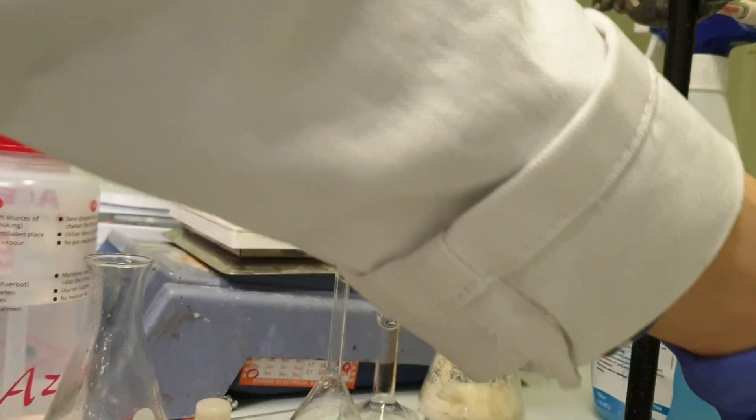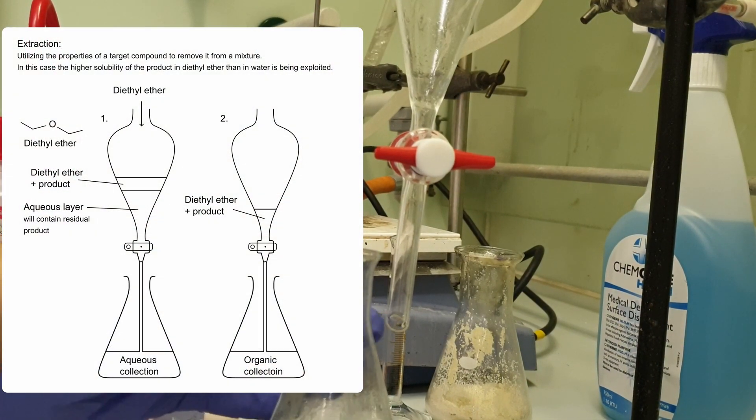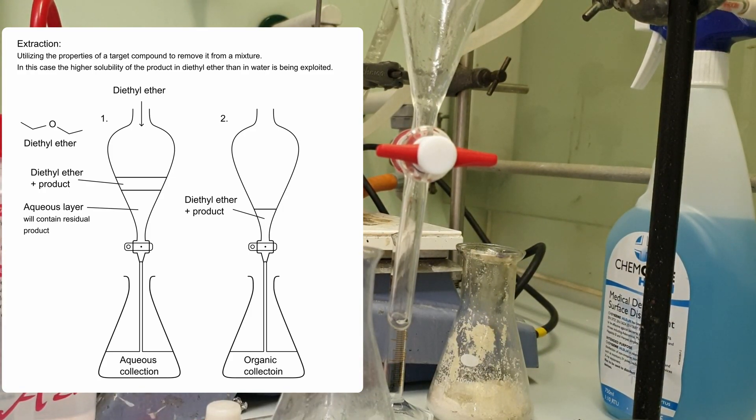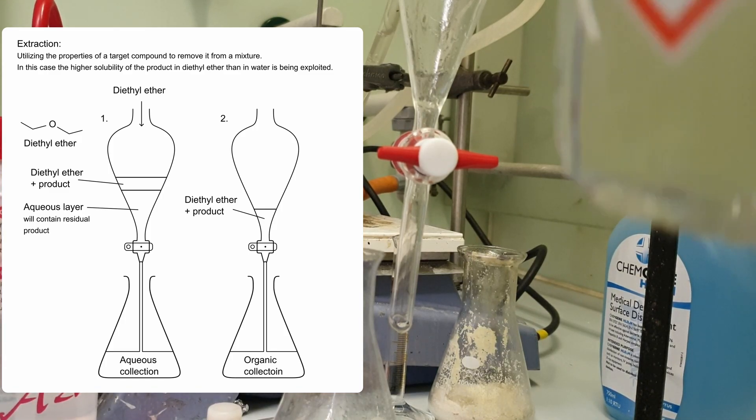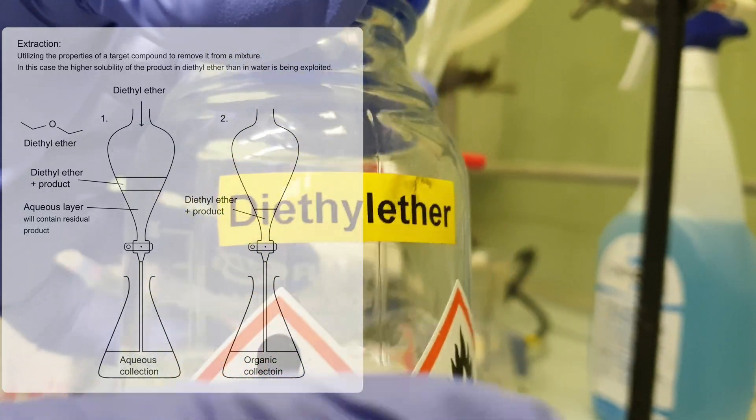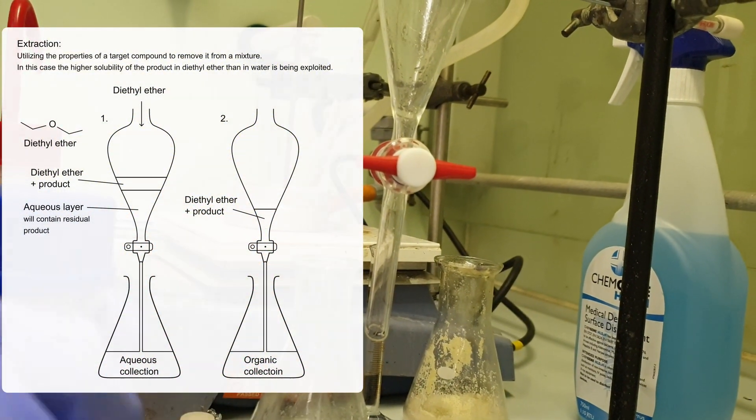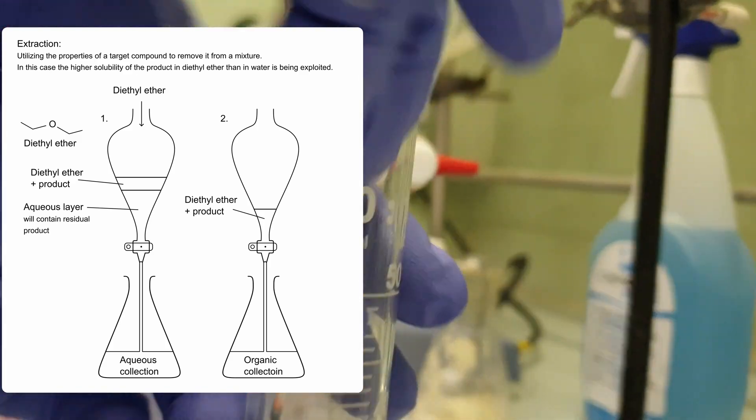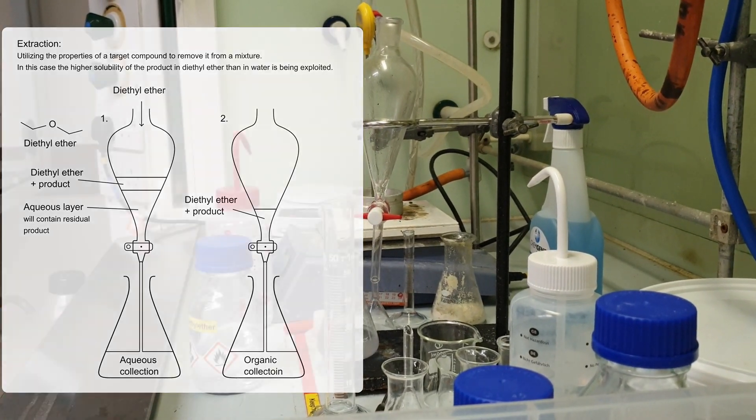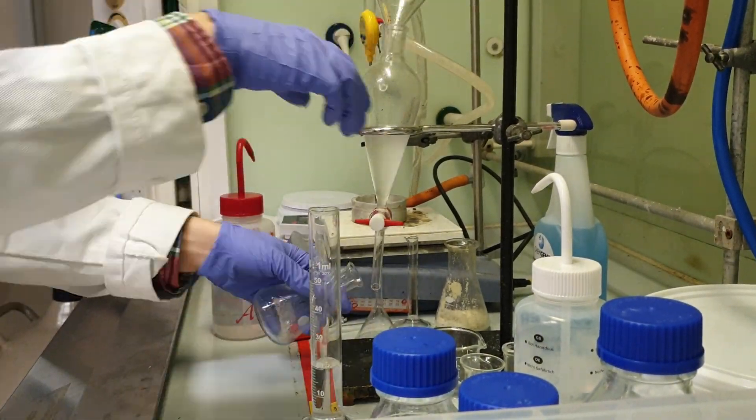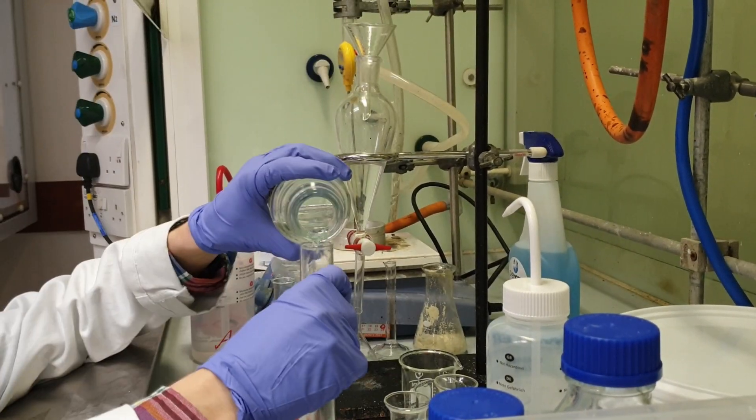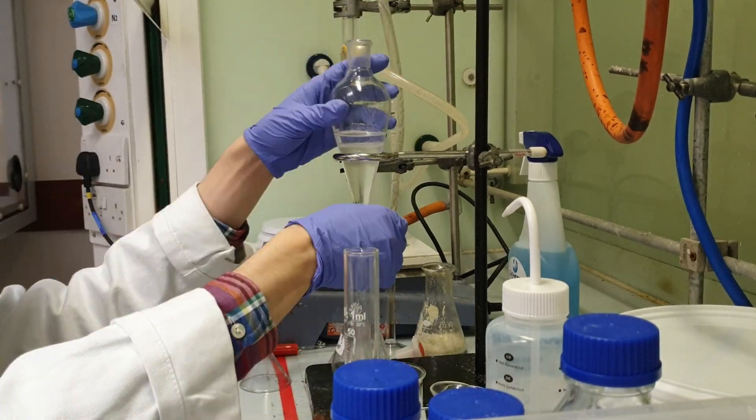I've got my first organic layer. I'm going to do some extraction on the aqueous layer and make sure I get all my product out of it. Basically my hexanol product is more soluble in ether than it is in water. So if I add ether to the aqueous layer I'll get two separate layers and quickly the ether layer will retain most of my product. I combined the aqueous layer with diethyl ether three times to get as much of my product out of the aqueous layer as possible.